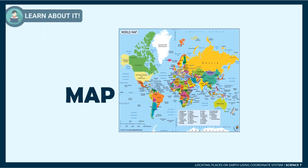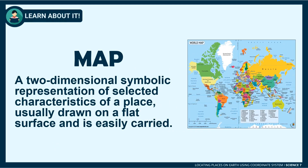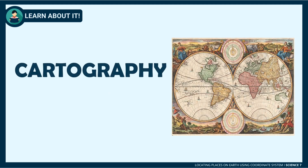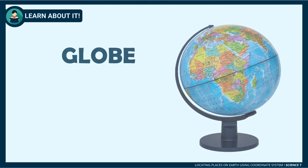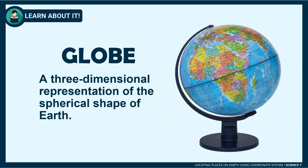A map is a two-dimensional drawing that gives a symbolic representation of places that can be used on flat surfaces and are easily carried. The art or science of making maps is called cartography, and those experts of making maps are known as cartographers.